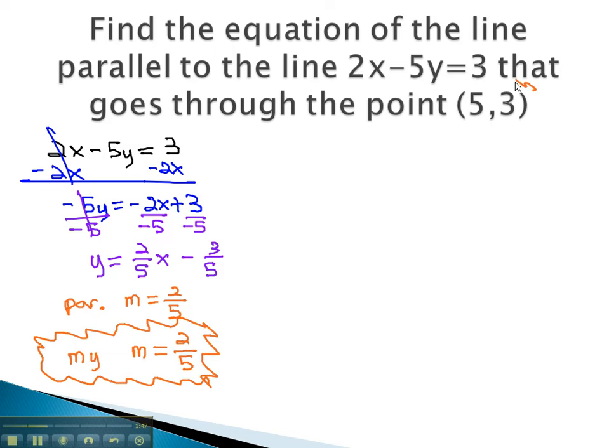Now that we know my slope is 2 fifths, and we have a point that's on the line, we're ready to come up with the equation. Because we don't know the y-intercept, we have to use y minus y1 equals m times x minus x1.